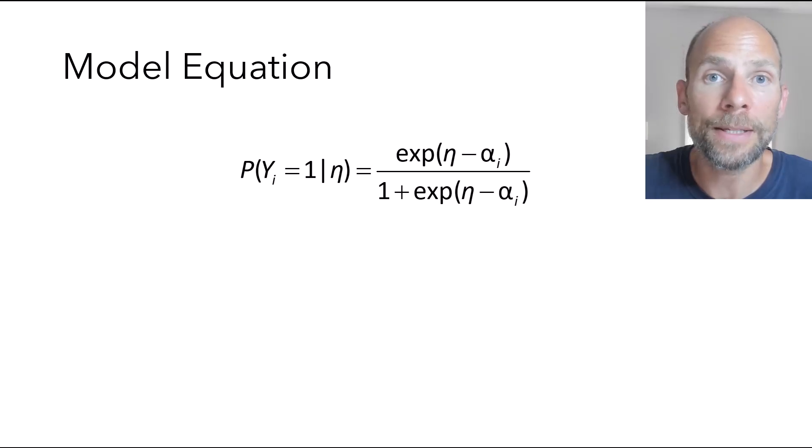And there would be beta slope coefficients in front of the x variables that are not included in the Rasch model for reasons that we'll discuss later. And then there's an intercept. And so the intercept beta 0 here parallels what we have in terms of alpha i. So here we have an intercept, but we don't have slope coefficients for eta.